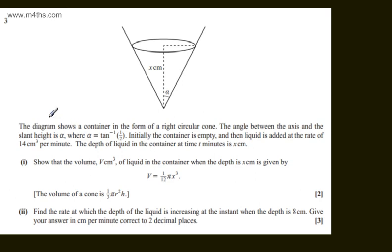In question number 3, we're told the diagram shows a container in the form of a right circular cone. The angle between the axis and the slant height is alpha, where alpha is equal to the inverse tan of one half. Initially, the container is empty, and then liquid is added at the rate of 14 centimeters cubed per minute.